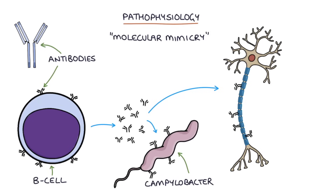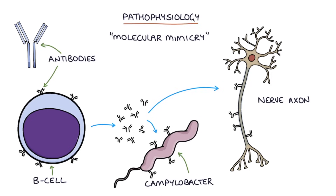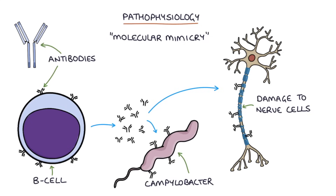The antibodies may target proteins on the myelin sheath of the motor nerve or on the nerve axon itself. This damage to the nerve cells because of these antibodies creates the neuropathy and the symptoms.